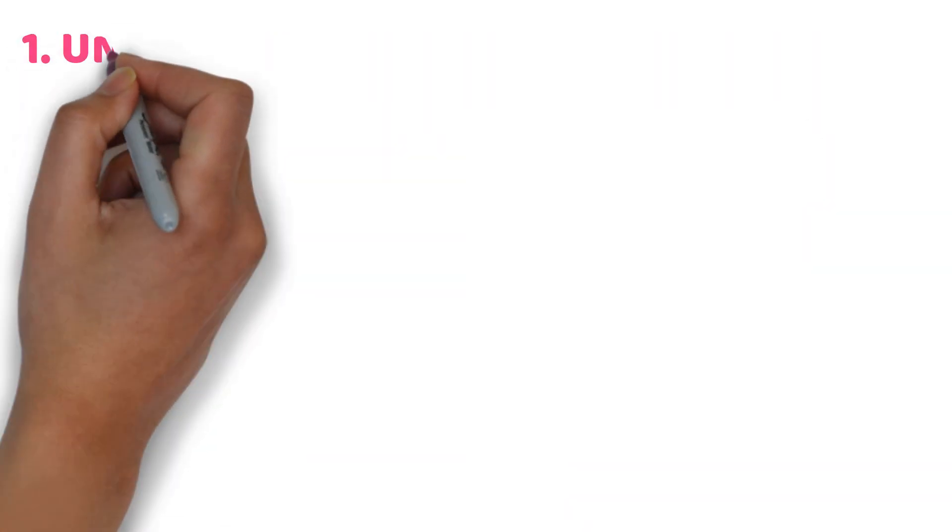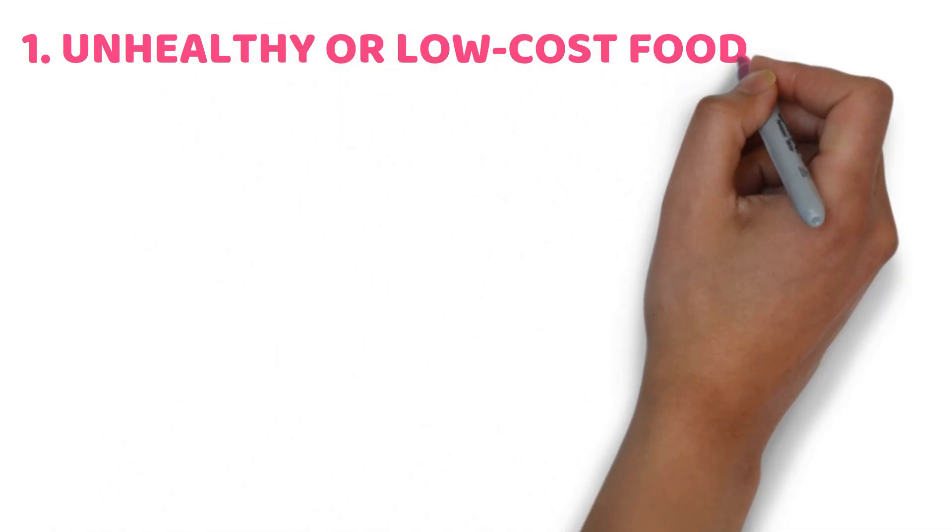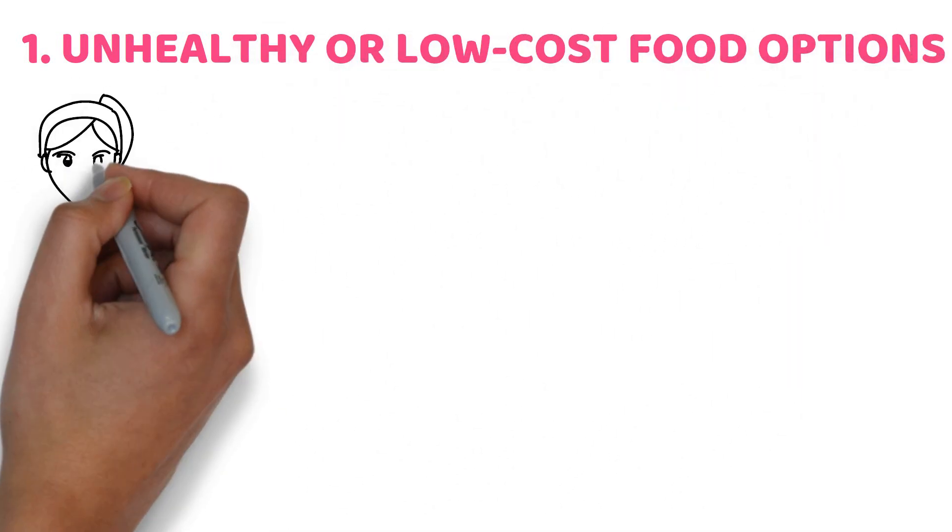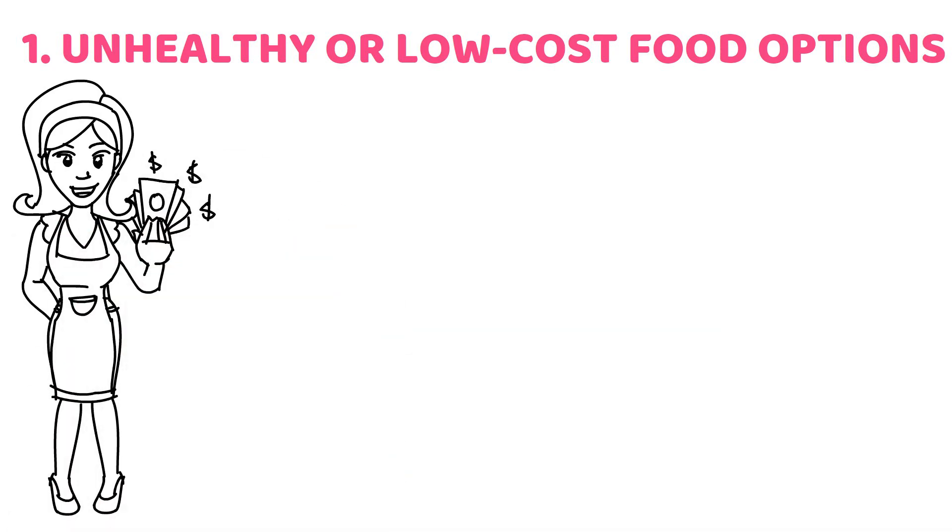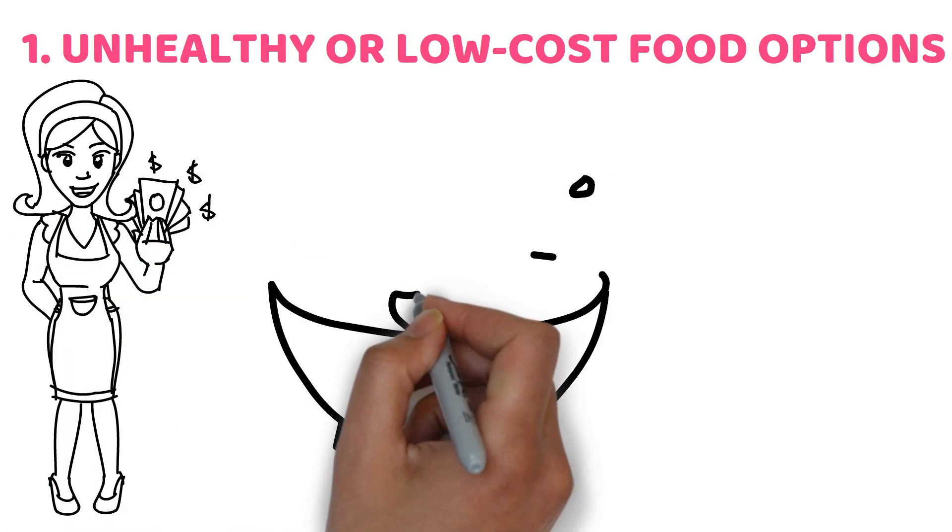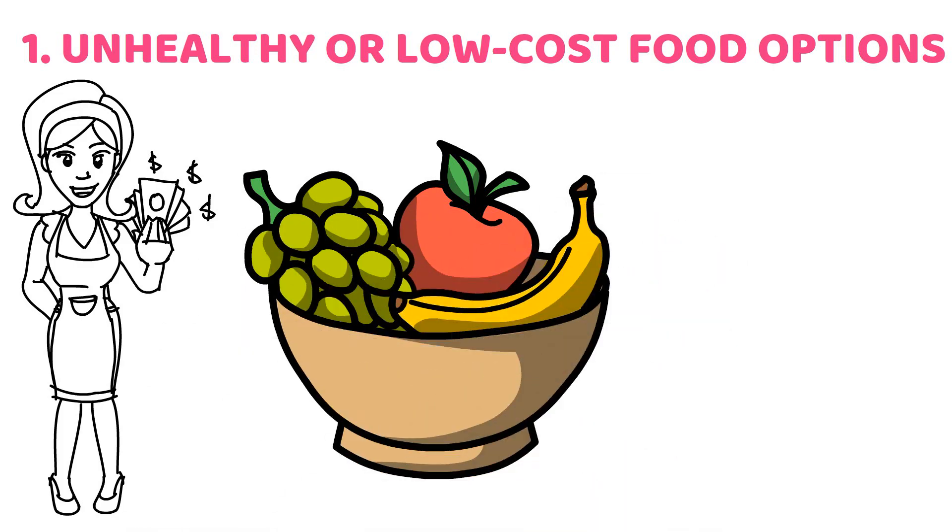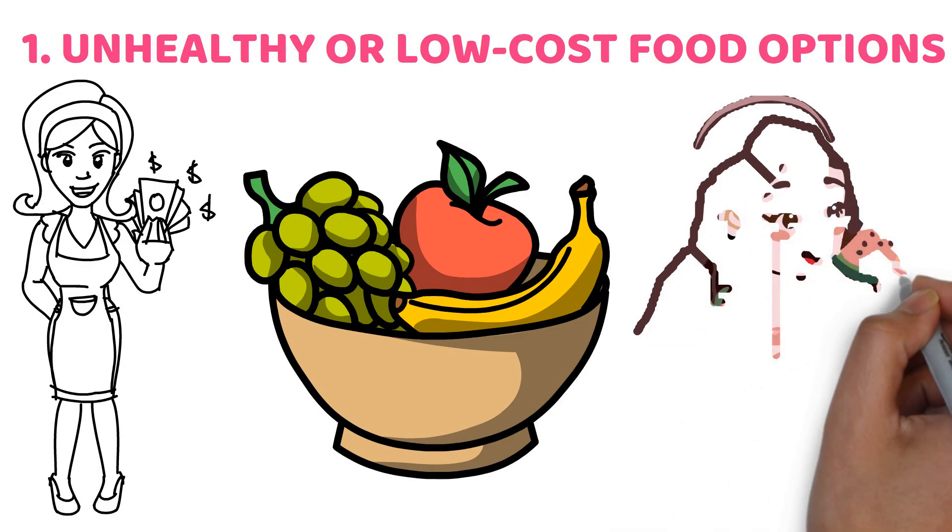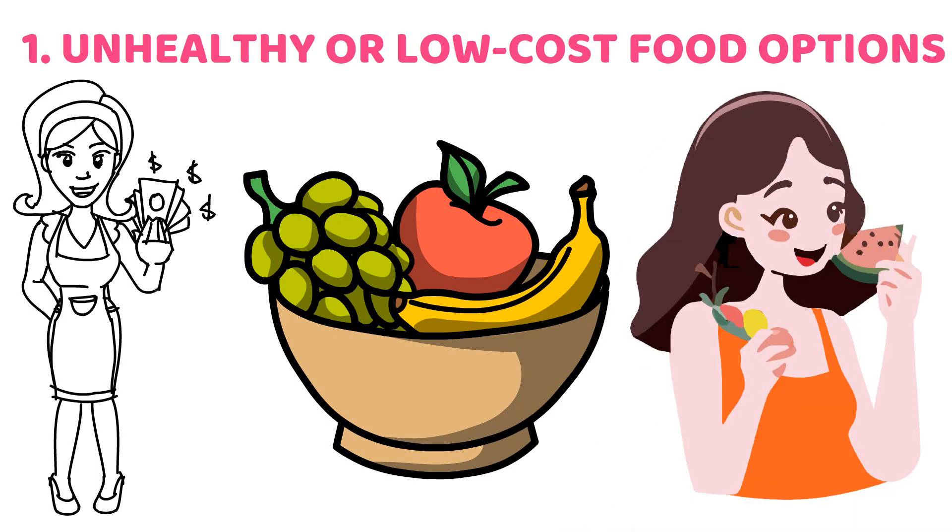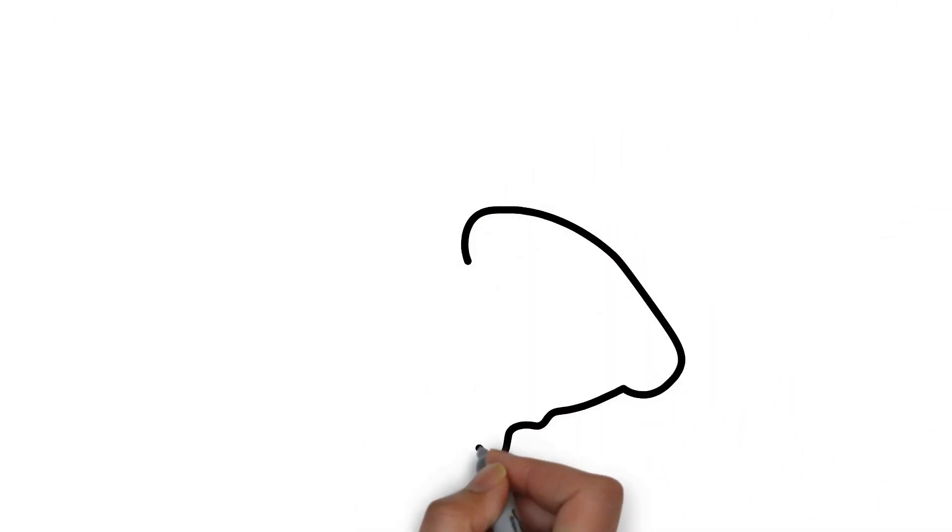One: Unhealthy or low-cost food options. People with greater disposable income may be more inclined to invest in their health by purchasing high-priced, nutrient-dense foods. They would rather spend a bit more on nutritious wholesome meals rather than eat at inexpensive fast food restaurants.